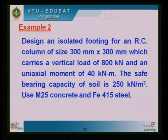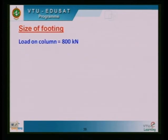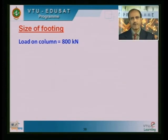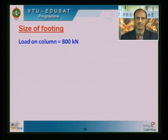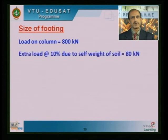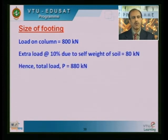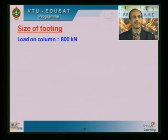Now let me go to the second example. Here the column size is 300 by 300 mm, the vertical load is 800 KN, there is a moment of 40 KNm, SBC is 250 KN per meter square, M25 grade concrete, and Fe 415 steel. Since the column is square, I again attempt to provide a square footing where L and B are the same. The procedure is slightly different from the last case because there is now a bending moment.